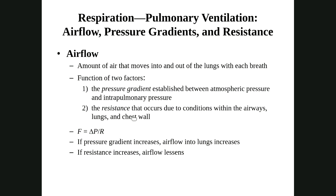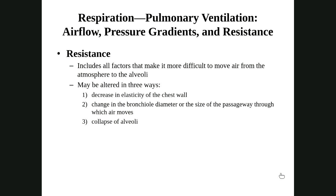Pressure drives gas movement in and out of the lungs, and resistance opposes flow — just like in cardiovascular: P must be greater than R to equal flow. Some resistances to airflow include compliance — the elasticity of the chest wall. If we can't stretch the chest wall easily, we have more resistance. Decrease in elasticity means more compliance resistance. Also important is the change in bronchiole diameter: bronchoconstriction and bronchodilation.